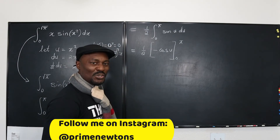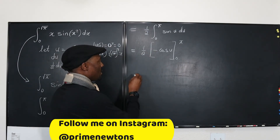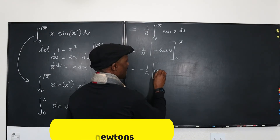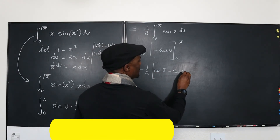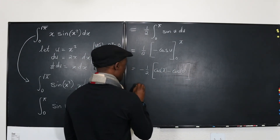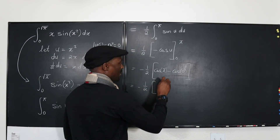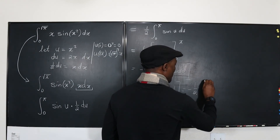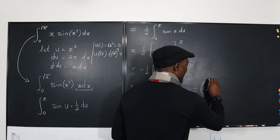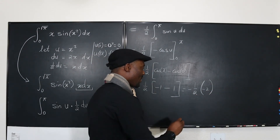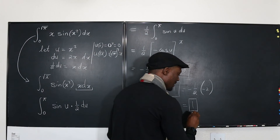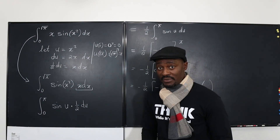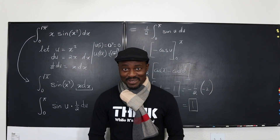To simplify evaluation, move the negative out front: this becomes negative one half times [cosine(pi) minus cosine(0)]. Cosine(pi) is negative one and cosine(0) is one, so we get negative one half times (negative one minus one), which is negative one half times negative two, giving us one. That's the answer to this definite integral using u-substitution. I hope this was helpful — don't stop learning; those who stop learning have stopped living. Bye-bye.